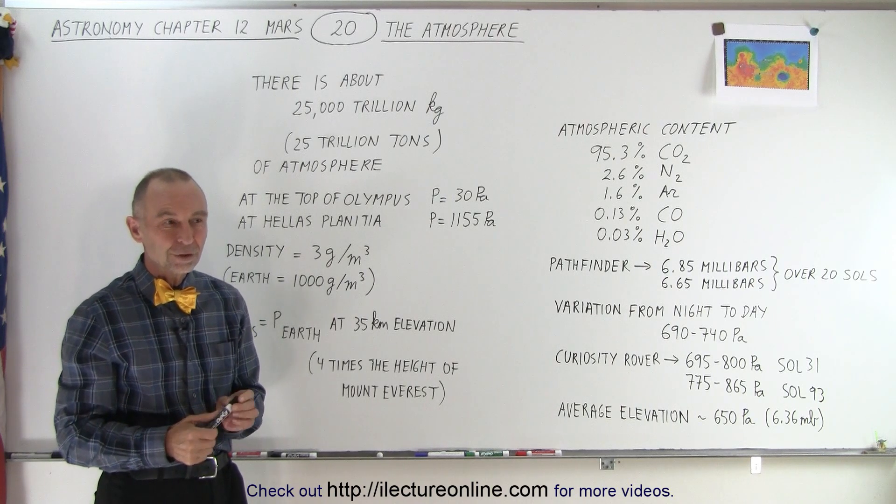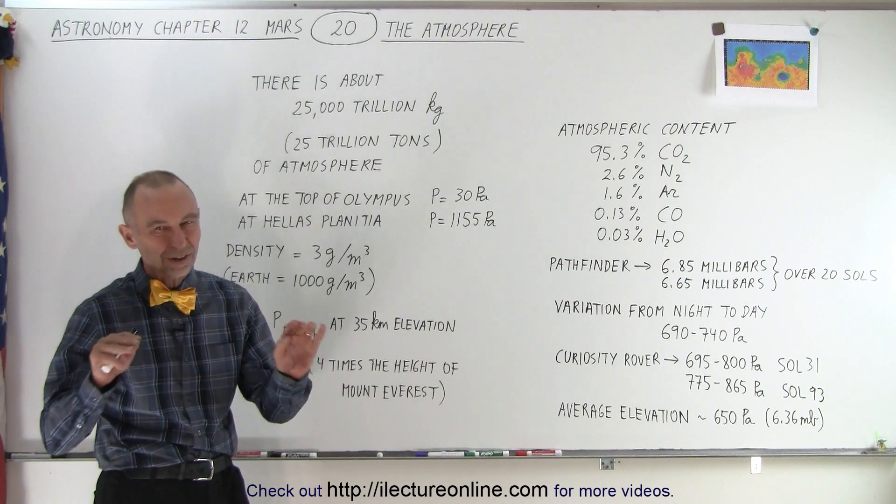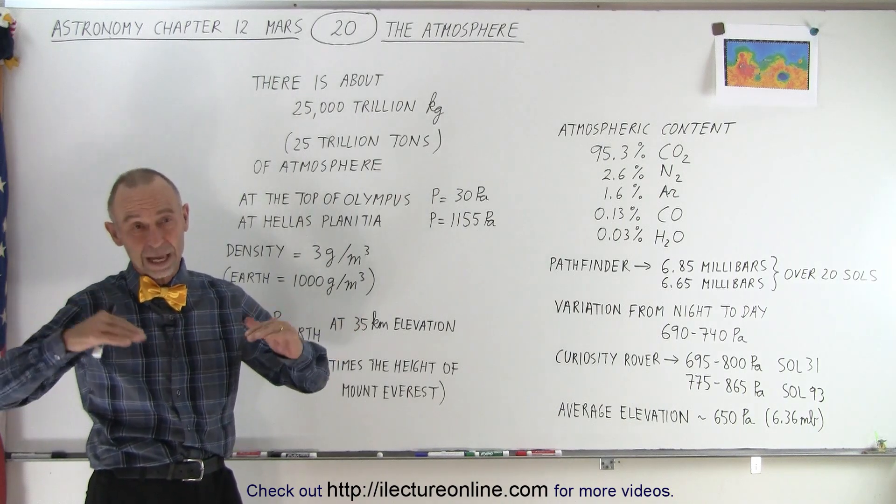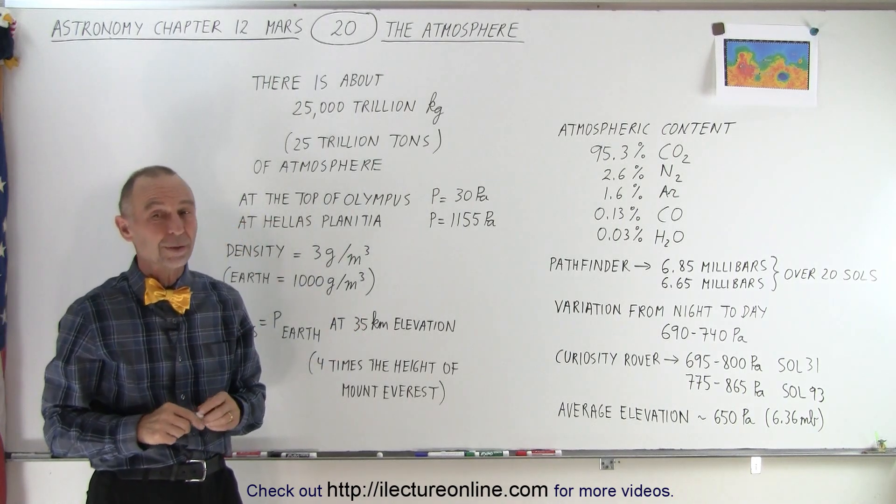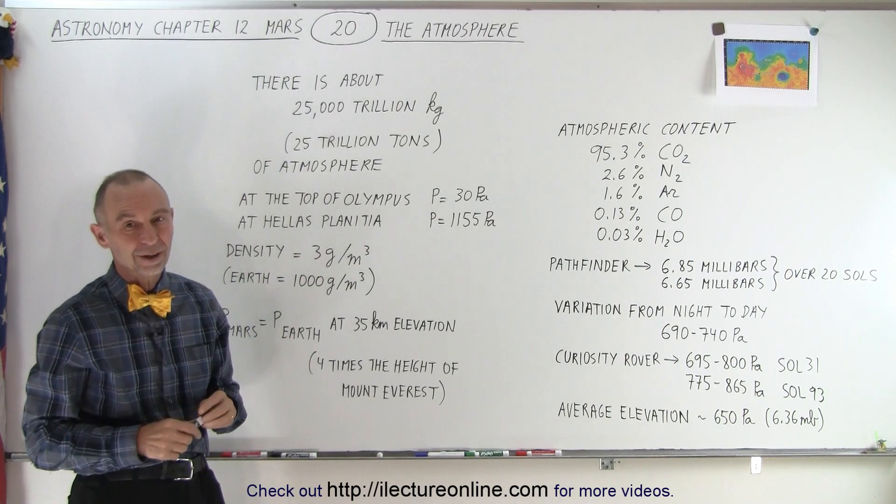What's on Earth? On Earth, it goes up to about 65 miles is considered the start of space, but the atmosphere continues on to about 200, 300 miles up. Again, very tenuous. So yeah, on Mars, it doesn't go nearly as high as on the Earth.